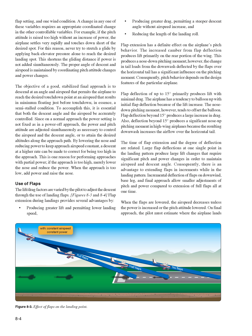At a given pitch attitude there is only one power setting for one airspeed, one flap setting, and one wind condition. A change in any one of these variables requires a coordinated change in the other controllable variables. For example, if the pitch attitude is raised too high without an increase of power, the airplane settles very rapidly and touches down short of the desired spot. Never try to stretch a glide by applying back elevator pressure alone—this shortens the gliding distance if power is not added simultaneously. The proper angle of descent and airspeed is maintained by coordinating pitch attitude and power changes.